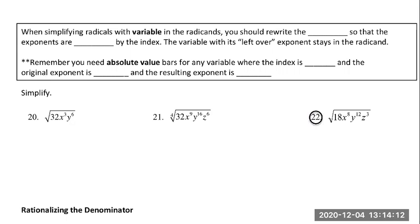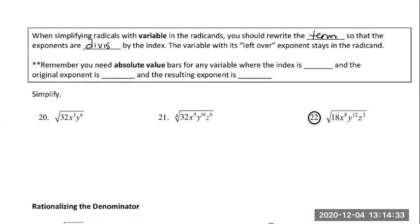So when simplifying radicals with a variable in the radicand, you should rewrite the term so that the exponents are divisible by the index. The variable with its leftover exponent stays in the radicand. Remember, you need absolute value bars for any variable where the index is even, the original exponent is even, and the resulting exponent is odd. We call this the even-even-odd rule — a helpful phrase to remember when absolute value bars are needed.